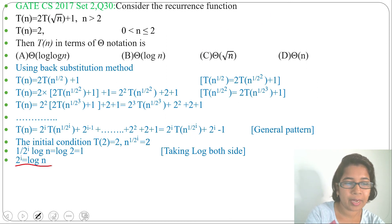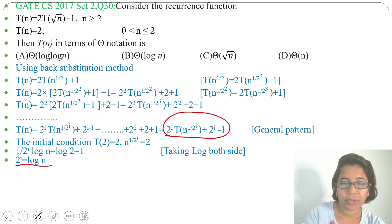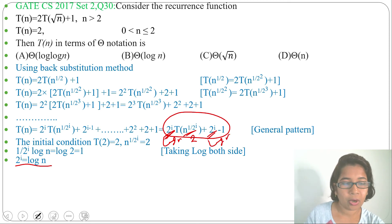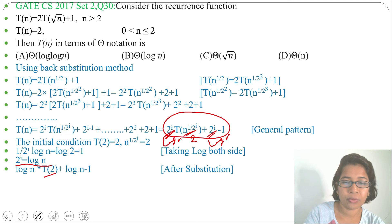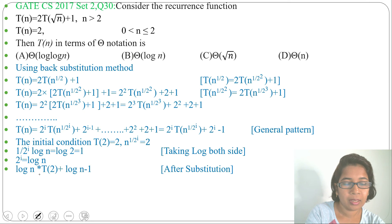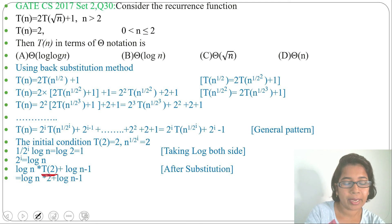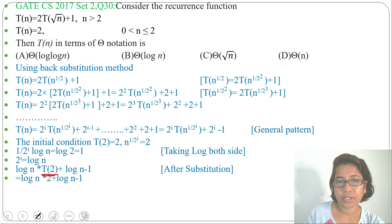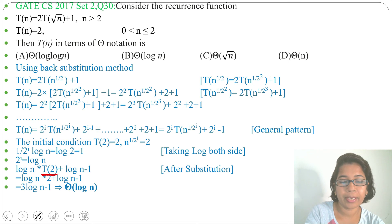Now we substitute this value into the general pattern. In place of 2^i we write log n, giving log n · T(2) + (log n − 1). Since T(2) = 2, we get 2·log n + log n − 1 = 3·log n − 1. The running time is therefore Θ(log n).